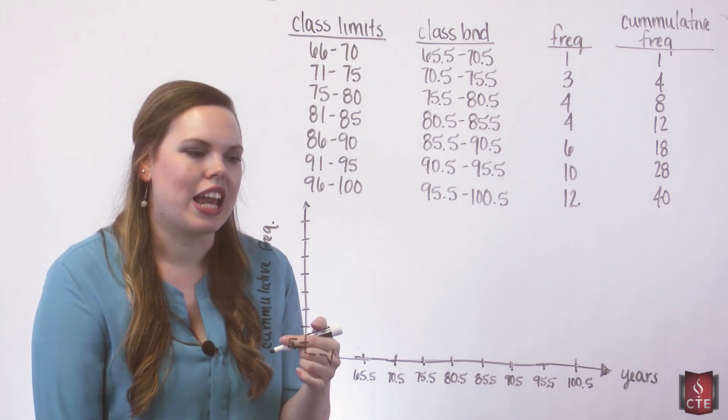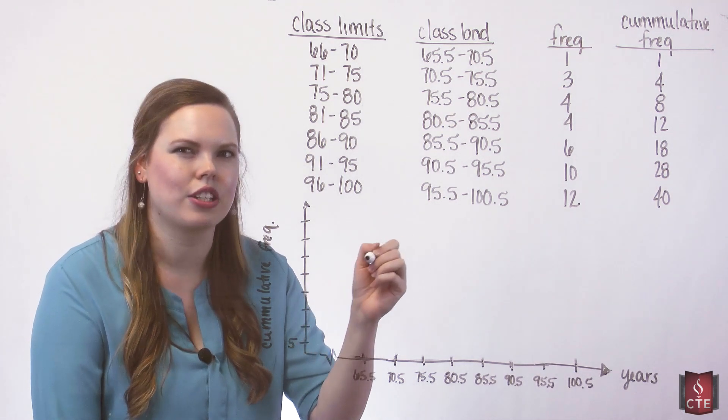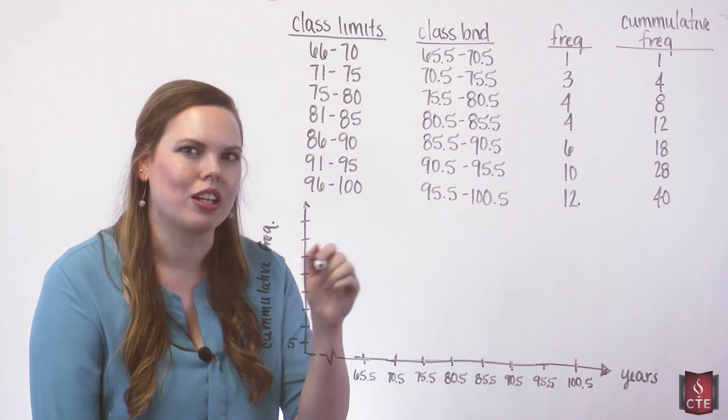Our ogive is a line graph with connecting the dots. So it's like a scatter plot where you connect the dots.